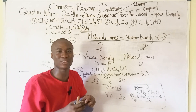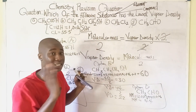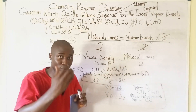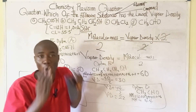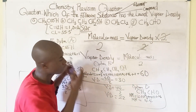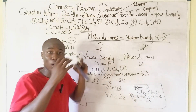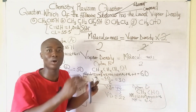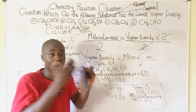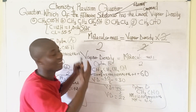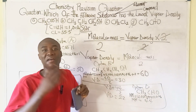Option D is the answer to the question. You might see questions like this in the JAMB examination, so take note of how it is solved — step by step. If you haven't subscribed, hit the subscribe button, give this video a like, and share these lessons with your friends. Thanks for watching.